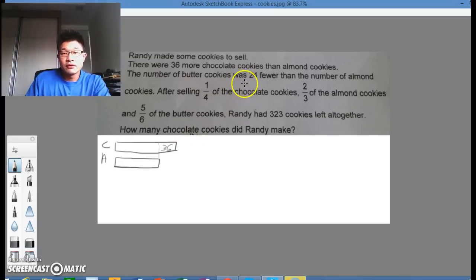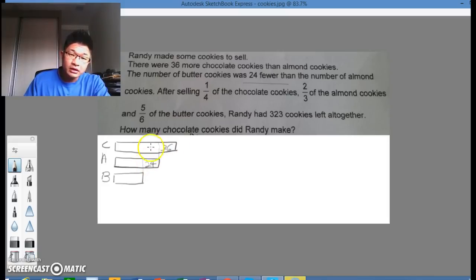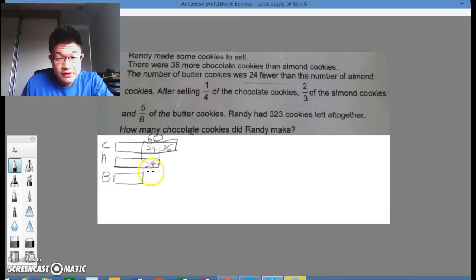And actually 24 fewer butter cookies. So when I draw the butter cookies, it would be actually a bit lesser. And here we have 24. And if there's 24 here, there will be 24 here as well, and that makes 60. Now the basis of comparison would therefore be this one unit here. These extras, we put them aside first.